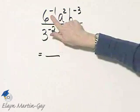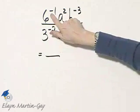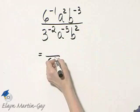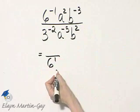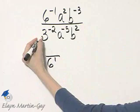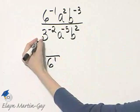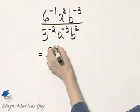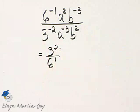In other words, this 6 to the negative 1 power in the numerator, if I move it to the denominator, it becomes a 6 raised to a positive power of 1. And this 3 to the negative 2 power in the denominator, if I move it to the numerator, it becomes 3 raised to a positive 2 power.